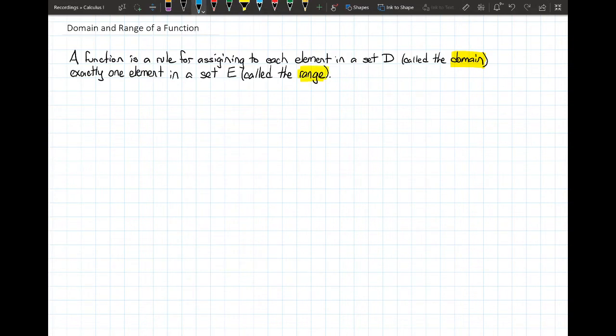If you wanted to look at that visually, you can imagine that we've got this collection of values over here, a set of numbers D, which is called the domain. And from there, we're going to pick some element out of that. Let's say we call that X.